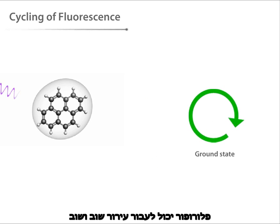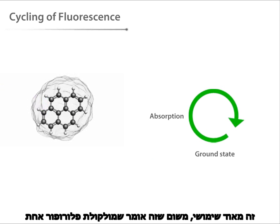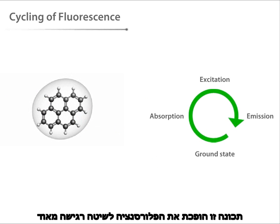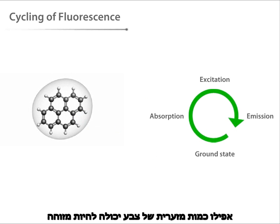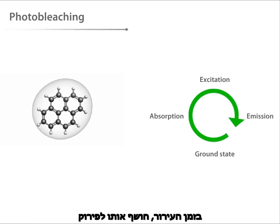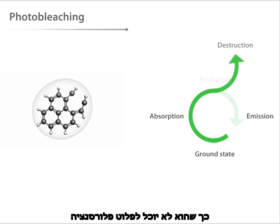A fluorophore can repeatedly undergo the fluorescence process, in theory indefinitely. This is extremely useful, because it means that one fluorophore molecule can generate a signal multiple times. This property makes fluorescence a very sensitive technique for visualizing microscopic samples — even a small amount of the stain can be detected. In reality, however, the fluorophore's structural instability during the excited lifetime makes it susceptible to degradation.